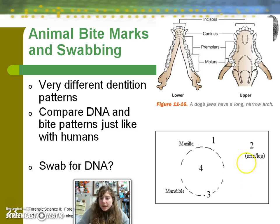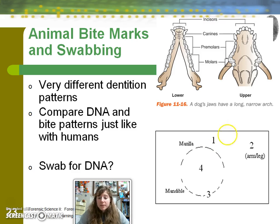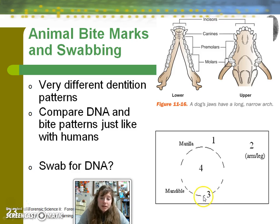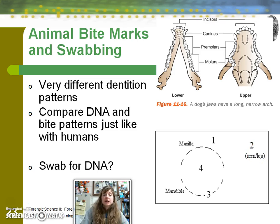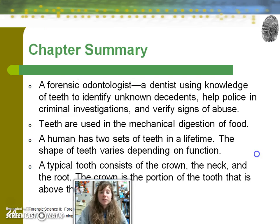Place number one is a good place to swab for DNA because that's where the lips would be, which may have some deposited cheek cells from the saliva. Number three would be a terrible place to swab because attorneys may argue that you altered the tooth mark impression by swabbing right there. Number four is a good place because that's where the tongue is. And number two is also a good place because that's your control — if you get the victim's DNA in there, you have it for comparison.